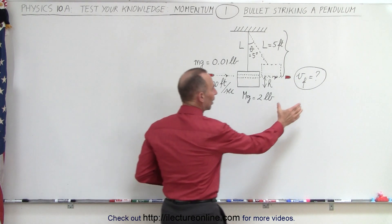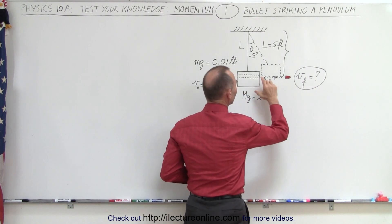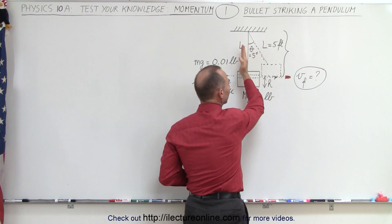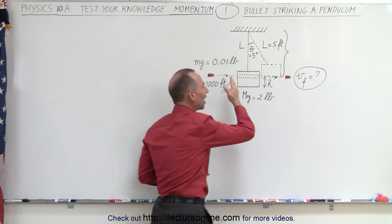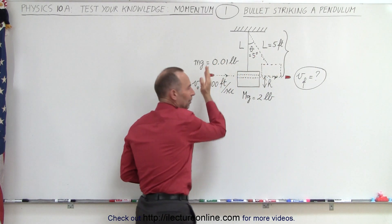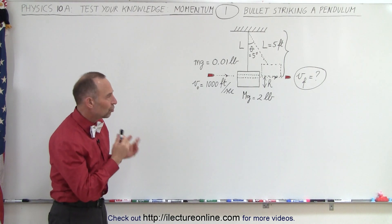We're trying to figure out the velocity of the bullet as it exits the block, realizing that the block has gained a certain amount of height such that the angle of the swing will be five degrees by the time it reaches its maximum height before the block begins to swing back.